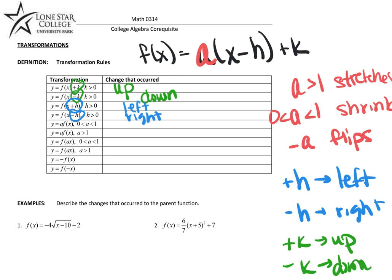h always moves opposite. a in the front, where a is in between 0 and 1, is a shrink. a in the front, where a is greater than 1, is a stretch.